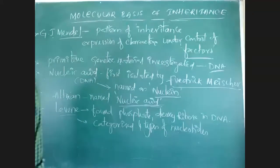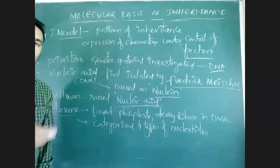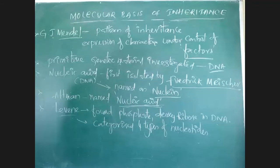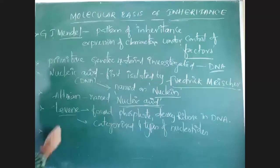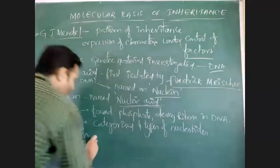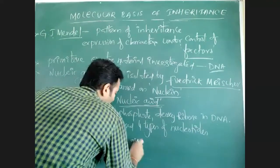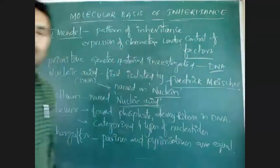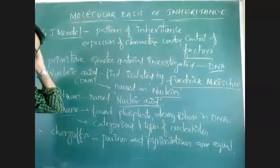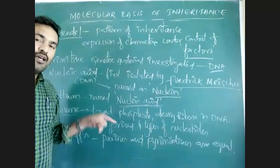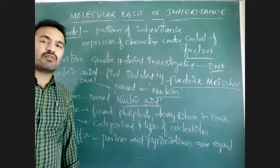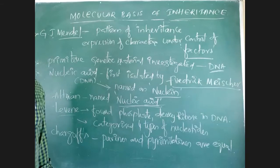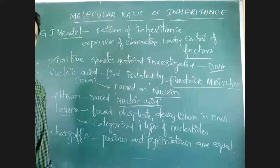Levin also categorized the four types of nucleotides. What are nucleotides? Nitrogen base, pentose sugar, and phosphoric acid — if these three are joined together, it is called a nucleotide. He found four types of nucleotides in DNA: adenine, guanine, cytosine, and thymine.